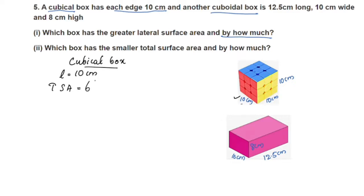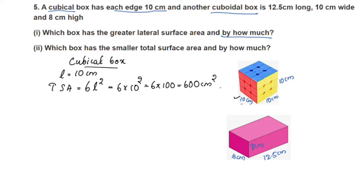The cubical box total surface area is 600 cm².